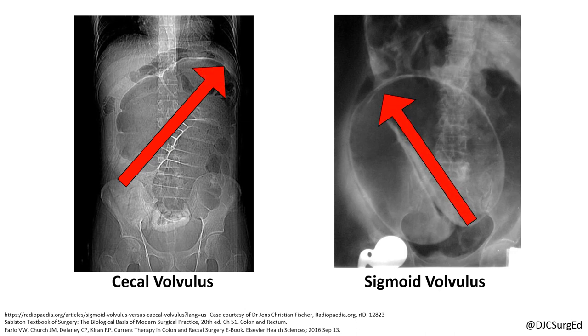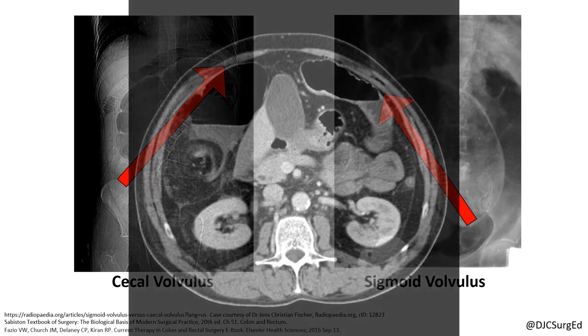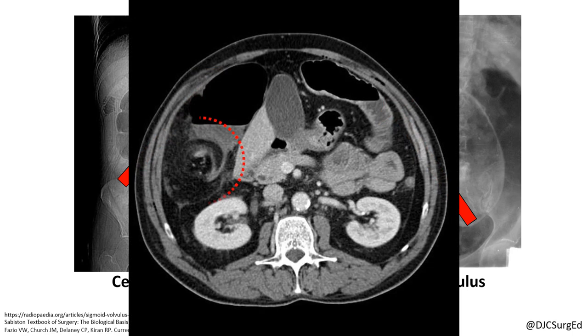Pathognomonic CT signs include a dilated colon centered around a whirled mesentery, known as a whirl sign.